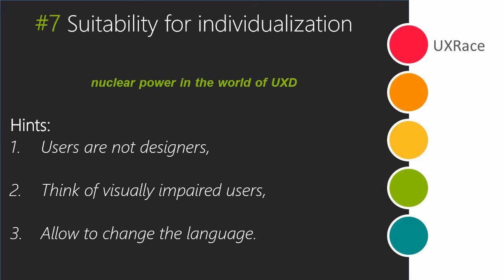The last dialogue principle is suitability for individualization — and this is actually the nuclear power in the world of user experience design, because it is extremely powerful and could be used for both evil and good. You may think: 'We provided our users with the ability to change the layout, so we don't have to waste time on layout design, because users know better.' Actually they don't — they are not designers and they don't know your product as well as you do. For individualization, for instance, think of visually impaired users, and if appropriate, allow the user to change the language.